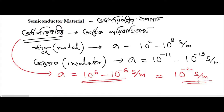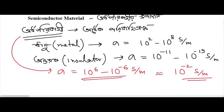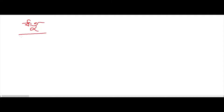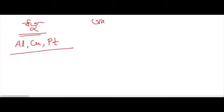So if we look at this contrast, the contrast between conductors and insulators is significant. In the beginning, they had examples of metals. They talk about metals such as aluminum, copper, and platinum.